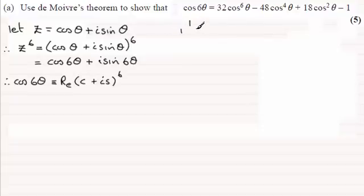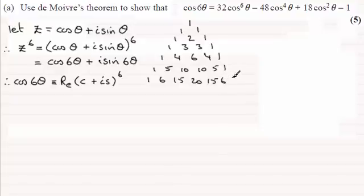So just quickly jotting down Pascal's triangle: 1, 1 1, 1 2 1, 1 3 3 1, take it up to the 6: 1 4 6 4 1, 1 5 10 10 5 1, and here's the one that we need: 1 6 15 20 15 6 1.